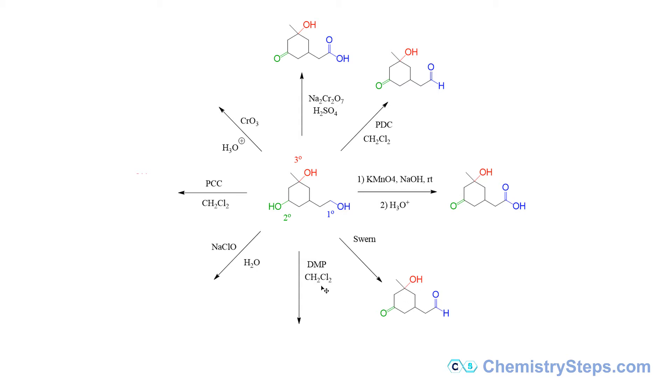So next we have the DMP, which is another common oxidizing agent. DMP stands for Dess-Martin periodinane, or sometimes it's just referred to as Dess-Martin oxidation, and this is also a selective reagent that if you want to oxidize a primary alcohol into an aldehyde, that's what we're going to use. And everything else, again same story: tertiary alcohol don't do anything, secondary goes into a ketone.